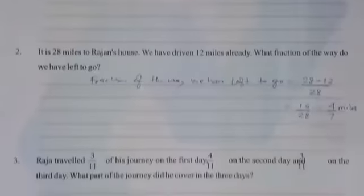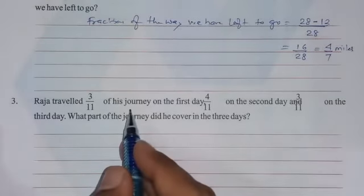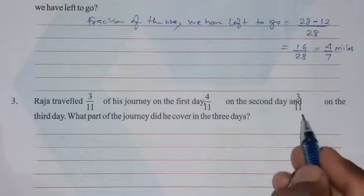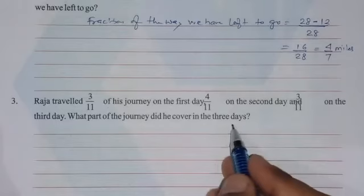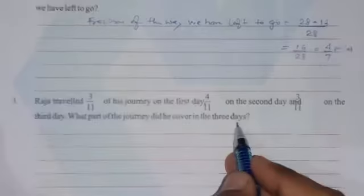See the next question, number 3. The question is: Raja traveled 3/11 of his journey on the first day, 4/11 on the second day, and 3/11 on the third day. What part of the journey did he cover in the three days?